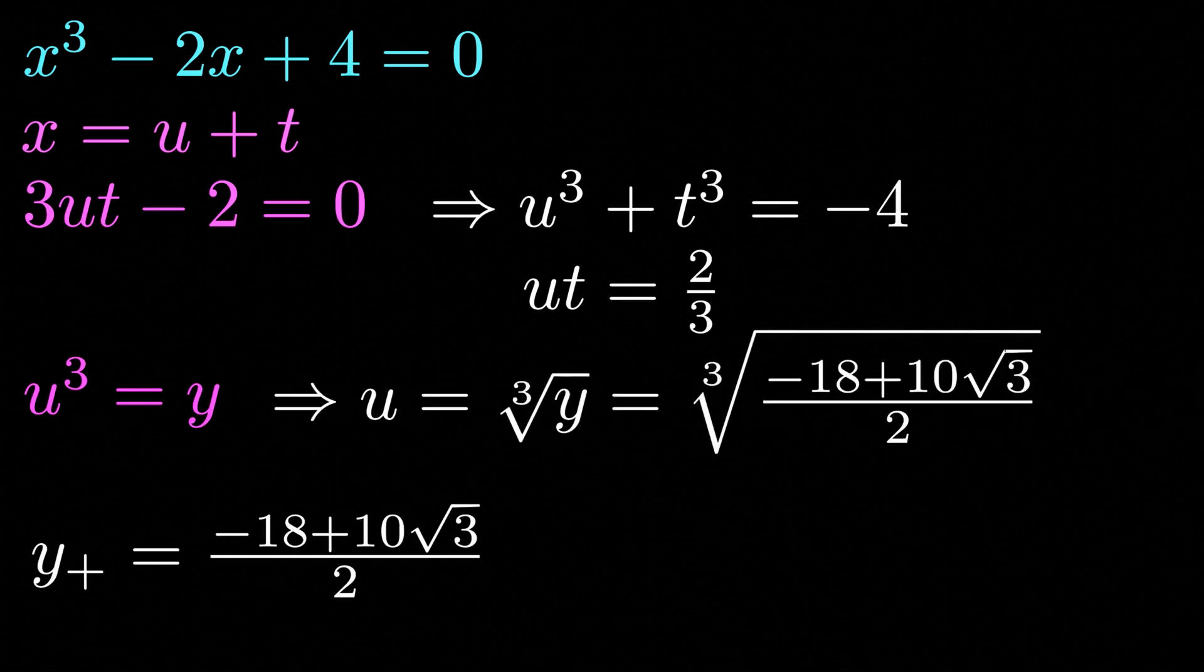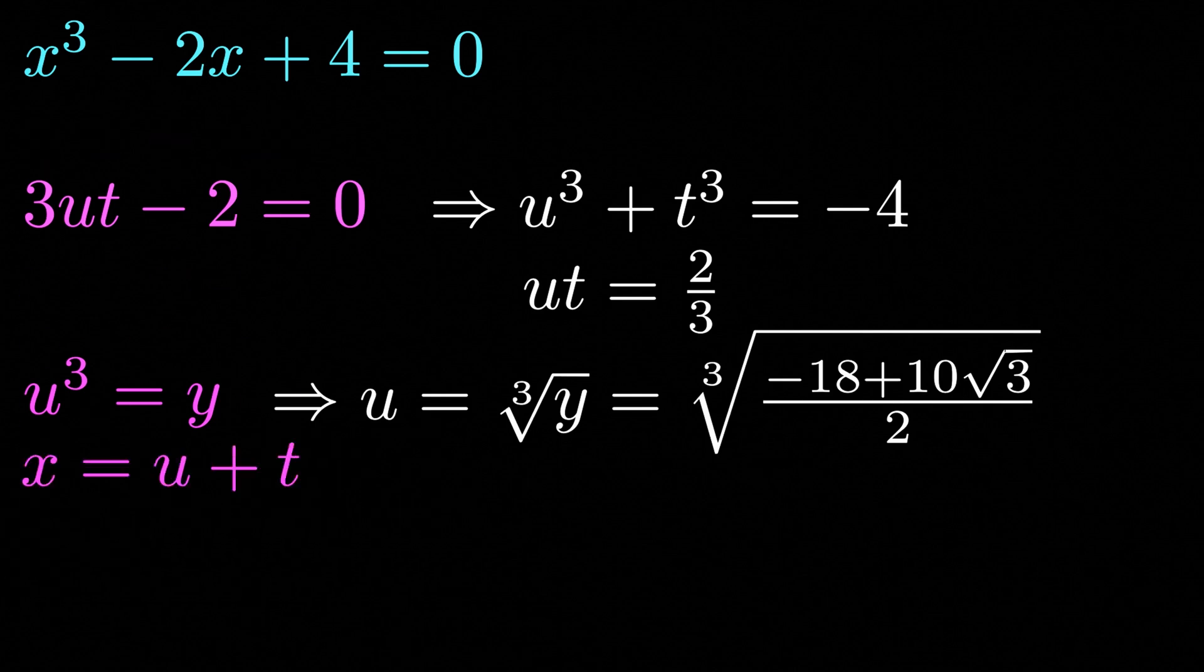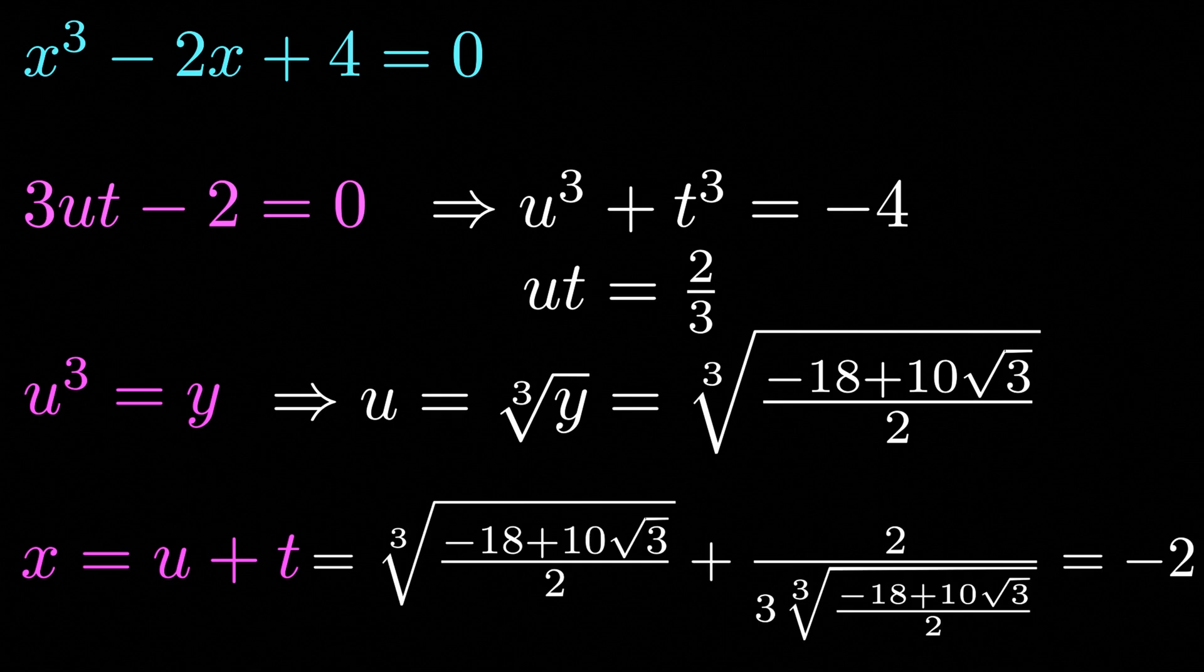But remember we want u not y. So solving for u, we have u equals the cube root of y, which is equal to the cube root of minus 18 plus 10 multiplied by the cube root of 3 divided by 2. And what we can actually go ahead and do is solve for t in our second equation so that we get t equals 2 divided by 3 multiplied by u, and this allows us to get x. So we have x equals u plus t, which equals the cube root of minus 18 plus 10 times the square root of 3 divided by 2 plus 2 divided by 3 multiplied by the cube root of minus 18 plus 10 multiplied by the square root 3 divided by 2, which equals minus 2.